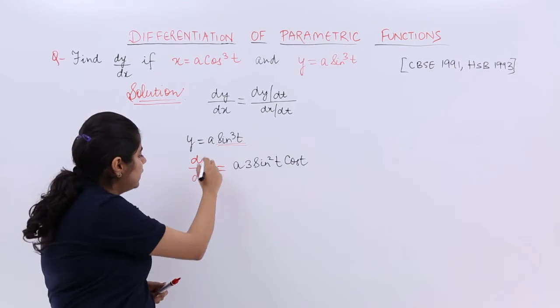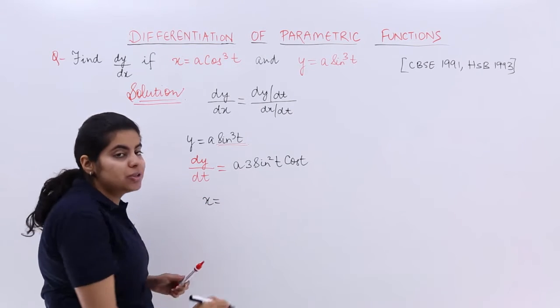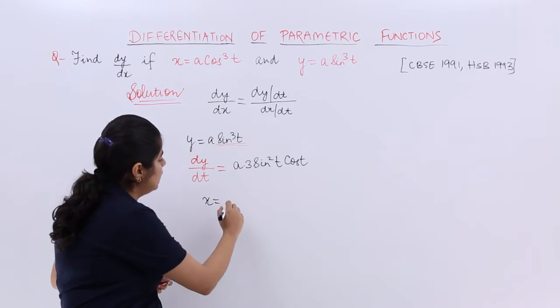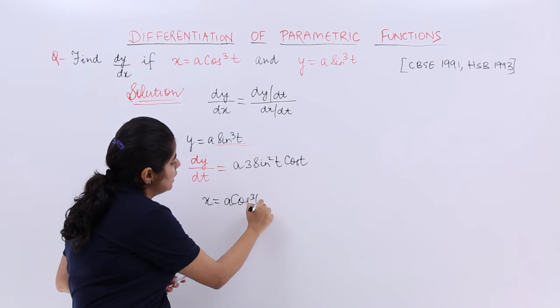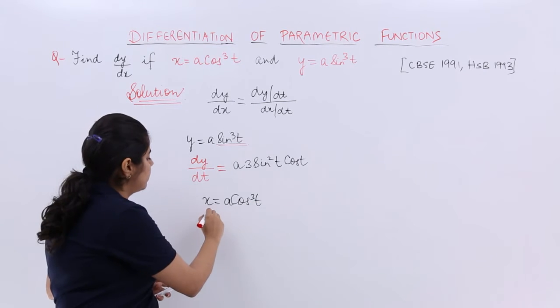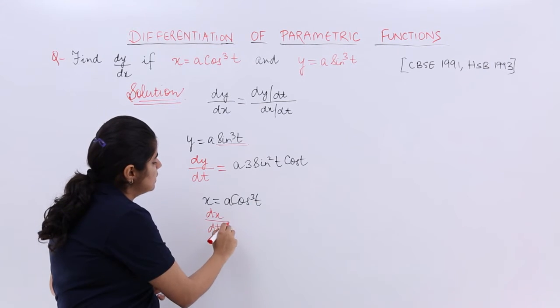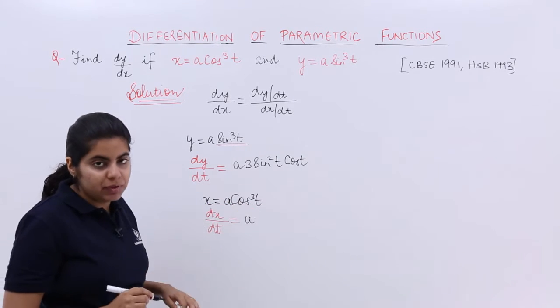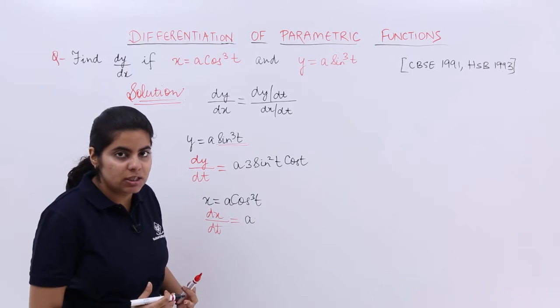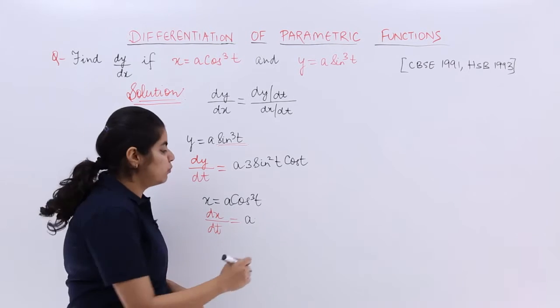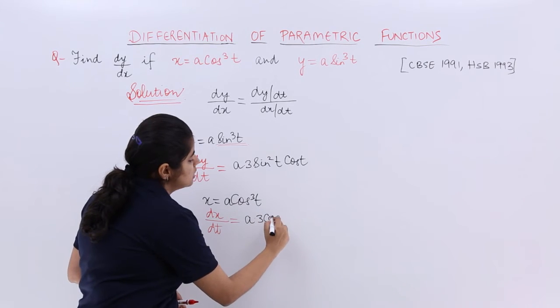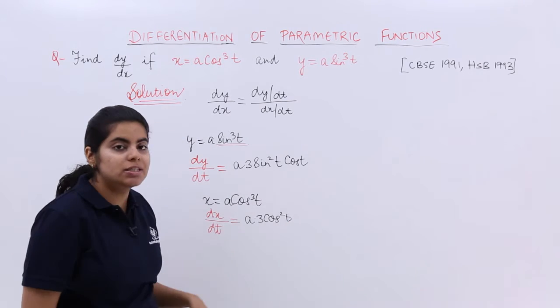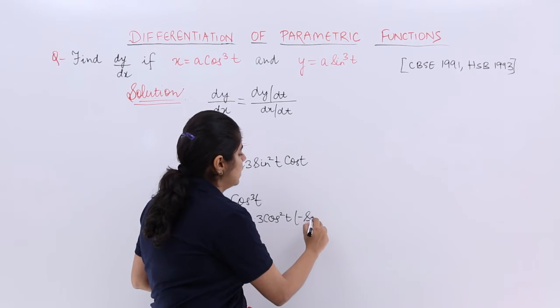Similarly, when you are done with the concept of treating y, then you have to treat x. A cos cubed t is given for x. What is dx/dt? Let's see. dx/dt is nothing but a being a constant, cos cubed t. Now cos cubed t is basically again the application of power rule, so it is 3 cos squared t, and cos t's differentiation is minus sin t.